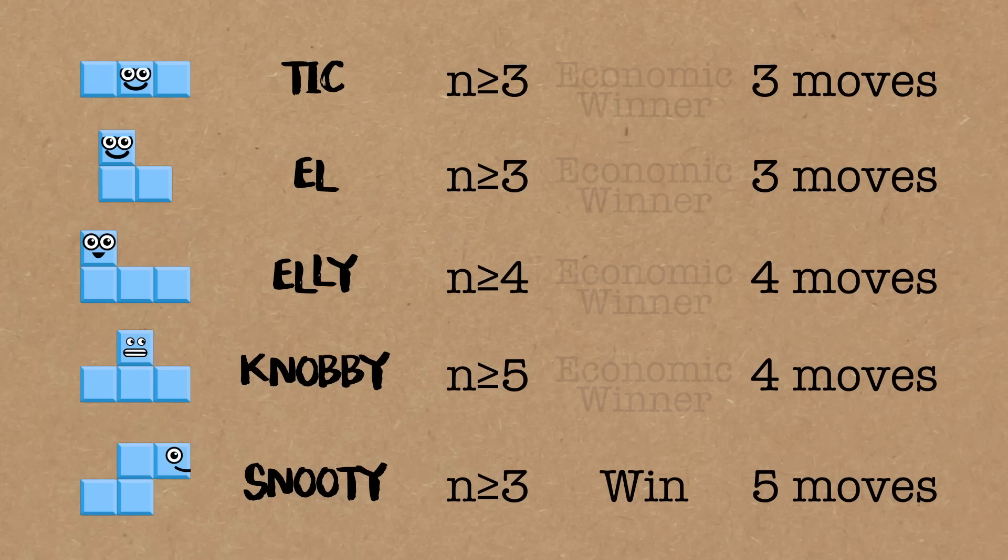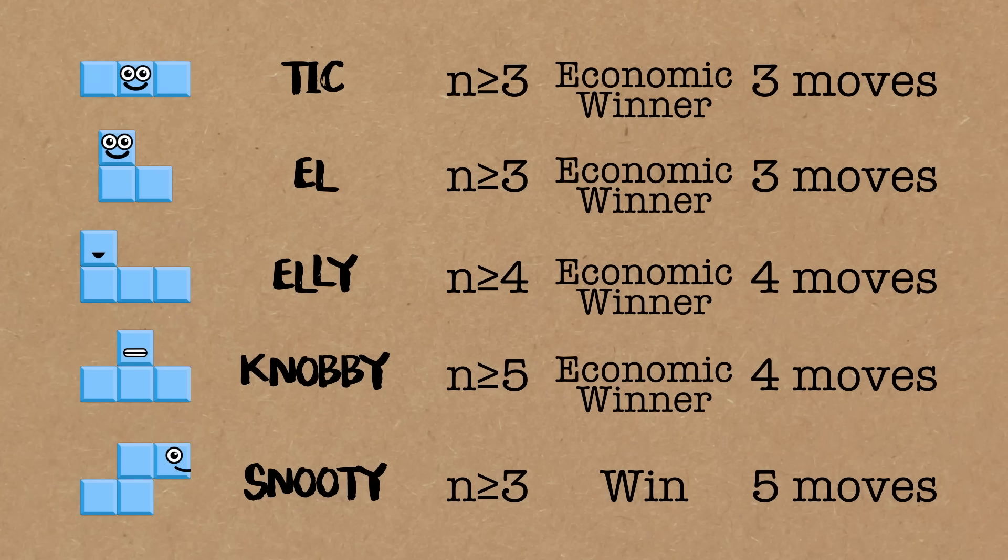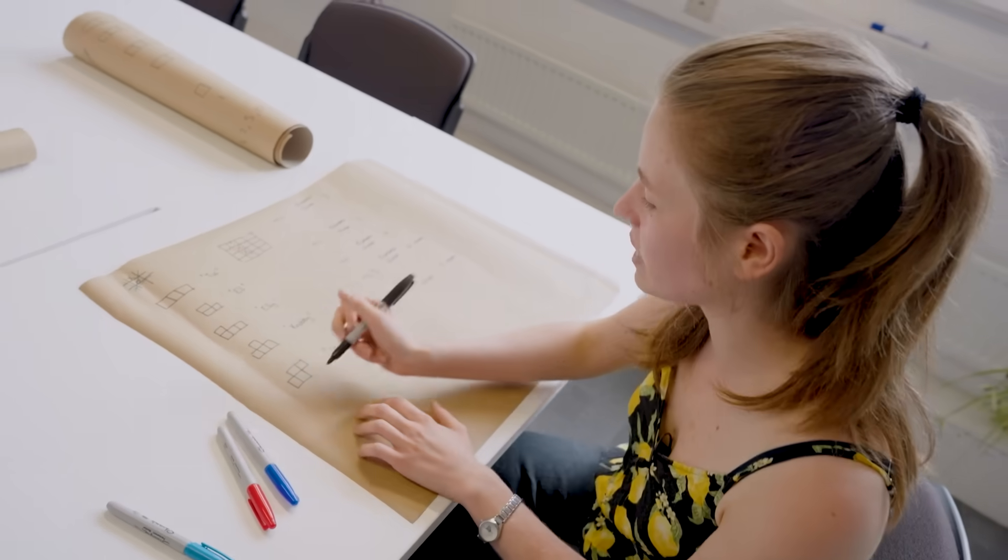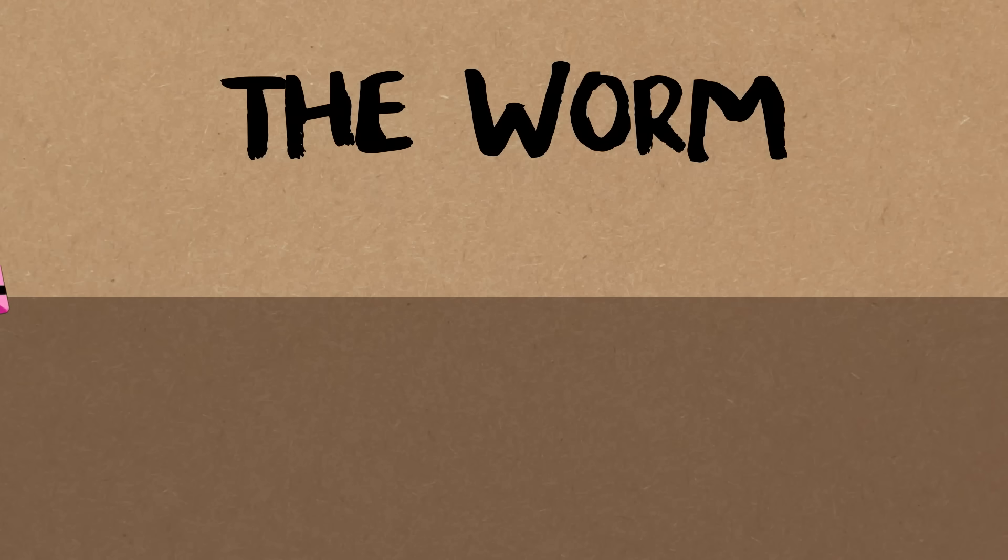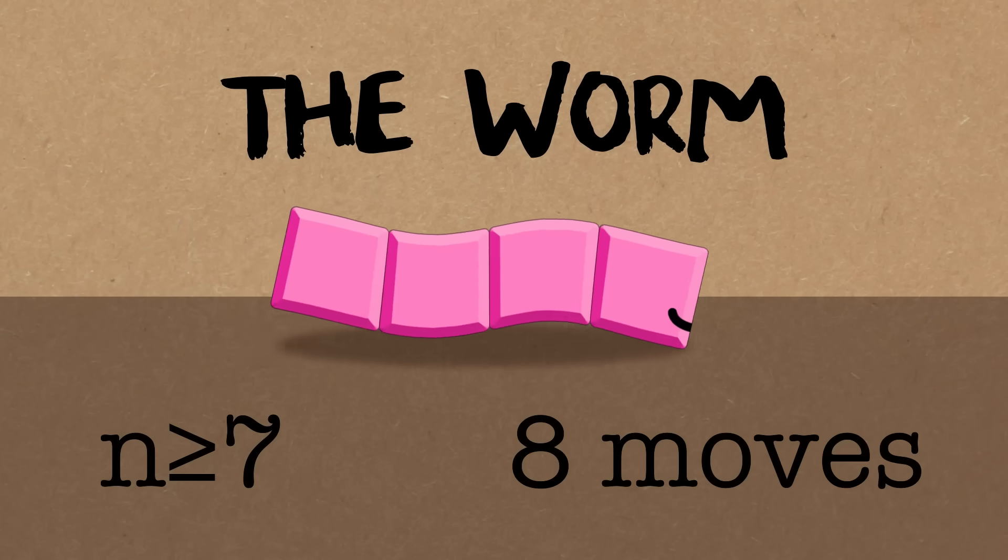So this game of animal tic-tac-toe was come up with by a man named Frank Harare. And he coined the term economic winner. This is a winner, but not an economic winner. Another winner that's not economic, the worm. And now the worm needs a seven by seven grid, at least. And this takes eight moves.